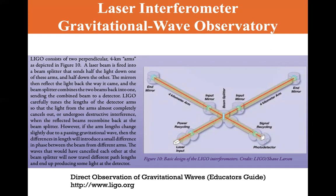LIGO consists of two perpendicular, four kilometer arms as depicted in figure 10. A laser beam is fired into a beam splitter that sends half the light down one of these arms and half down the other. The mirrors then reflect the light back the way it came and the beam splitter combines the two beams back into one, sending the combined beam to a detector. LIGO carefully tunes the lengths of the detector arms so that the light from the arms almost completely cancels out or undergoes destructive interference when the reflected beams recombine back at the beam splitter.